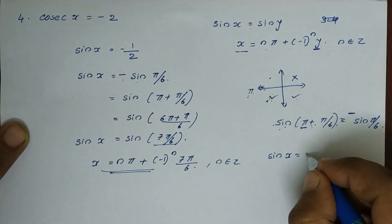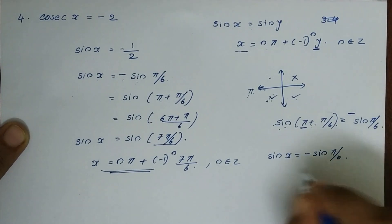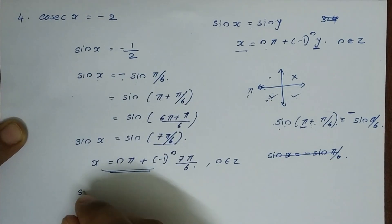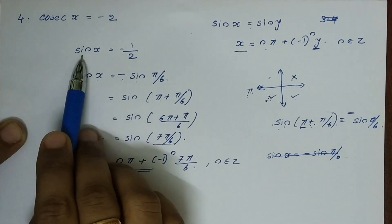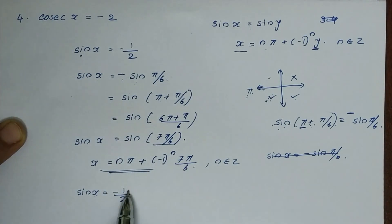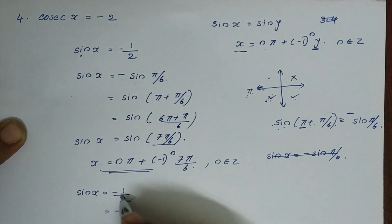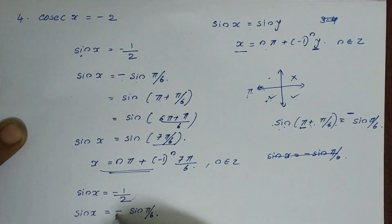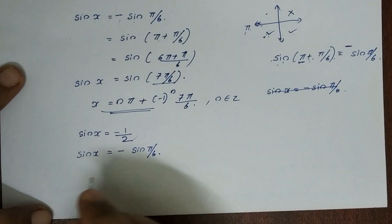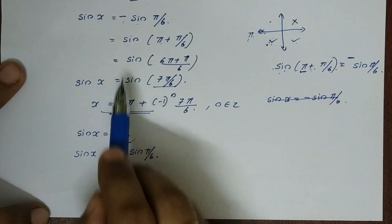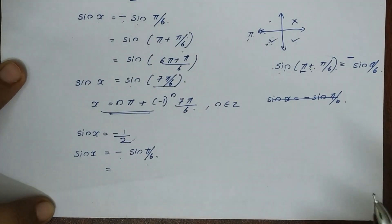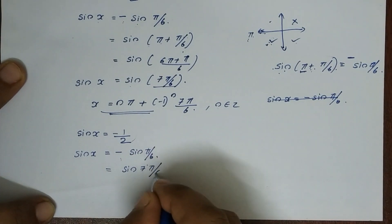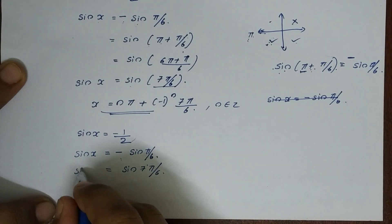Sin x is equal to minus sin(π/6). The first step: we take the reciprocal to get sin x equal to minus 1 by 2. Since sin(π/6) = 1/2, we write sin x equal to minus sin(π/6), which equals sin(π + π/6) = sin(7π/6). So we get sin x equal to sin(7π/6).